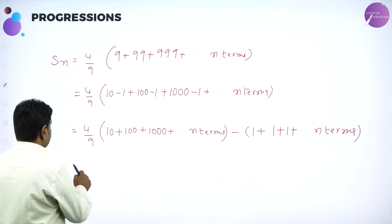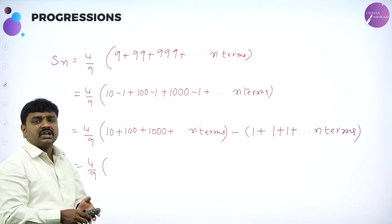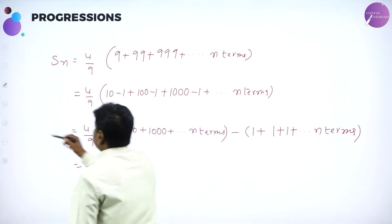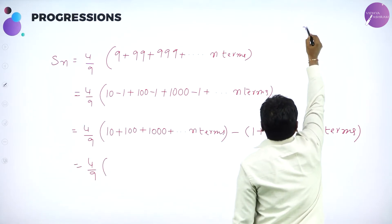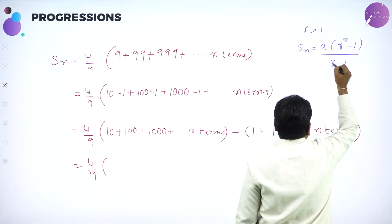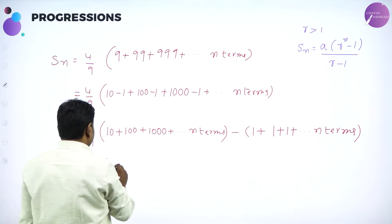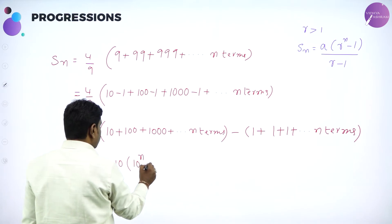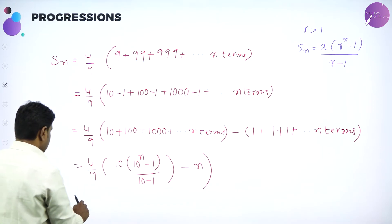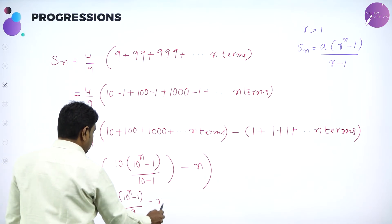Simplify: 4/9. You know 10, 100, 1000 — multiply by 10 to get the next term — they are in GP with common ratio 10. Sum of n terms in GP when R > 1: A × (R^n − 1) / (R − 1), where A is the first term and R is common ratio. So substitute: A=10, R=10: 10 × (10^n − 1) / 9 minus n. Finally: 4/9 × [10 × (10^n − 1) / 9 − n]. This is the answer.